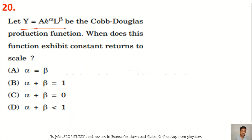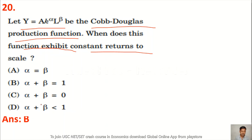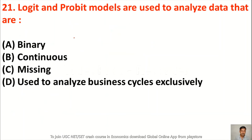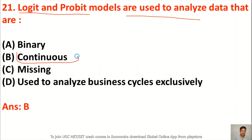Question 20: Let Y = A·K^α·L^β be the Cobb-Douglas production function. When does this function exhibit constant returns to scale? Option A: α = β, option B: α + β = 1, option C: α + β = 0, option D: α + β < 1. The right answer is option B — α + β = 1. Question 21: Logit and probit models are used to analyze data that are — binary, continuous, missing, or used to analyze business cycles exclusively. The correct answer is option A — binary. Logit and probit models are statistical models used to model binary or dichotomous dependent variables.